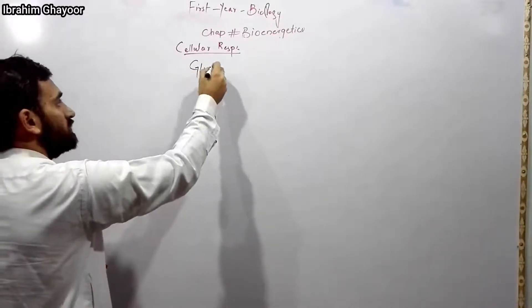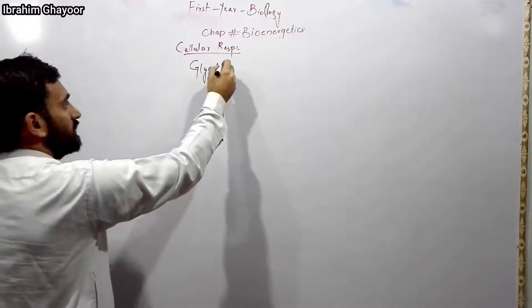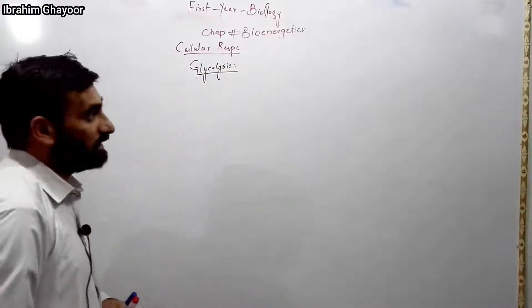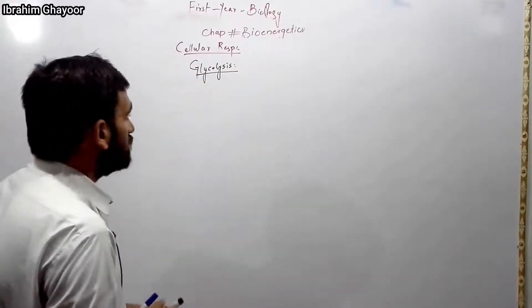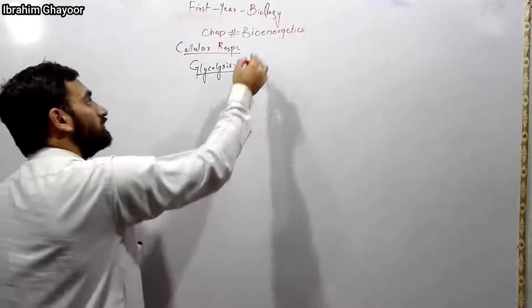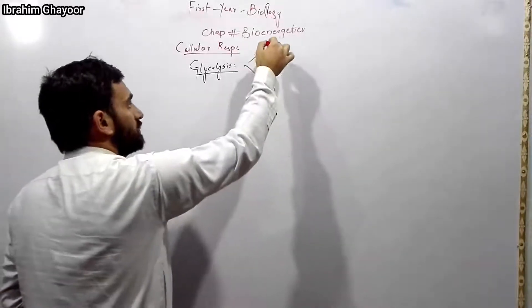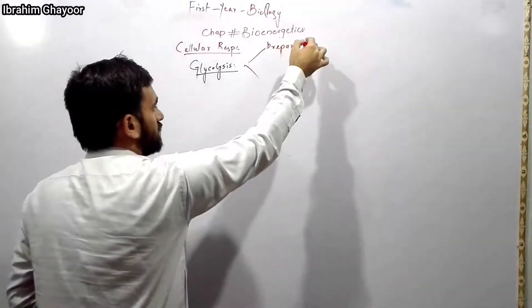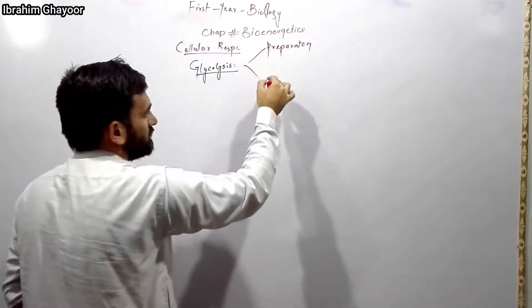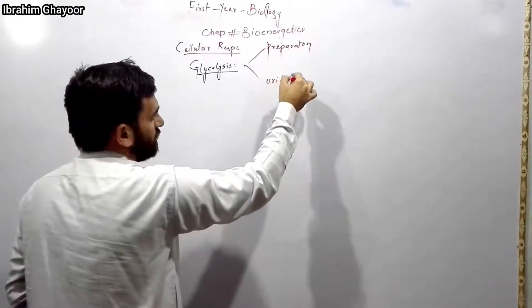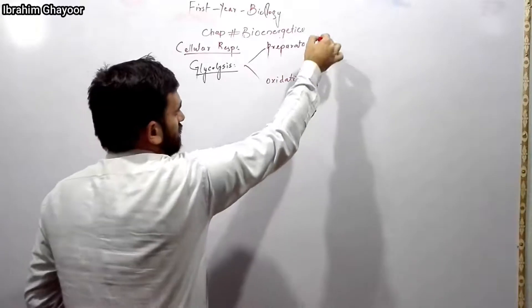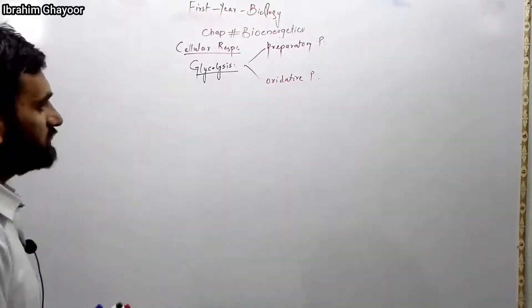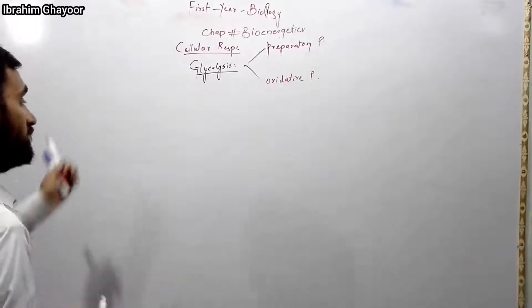Together, we look at glycolysis. Glycolysis comes from two Greek words: 'glyco' meaning glucose and 'lysis' meaning splitting. Glycolysis has two steps — the preparatory phase and the oxidative phase. In the preparatory phase, there is energy investment, and in the oxidative phase, energy is gained.